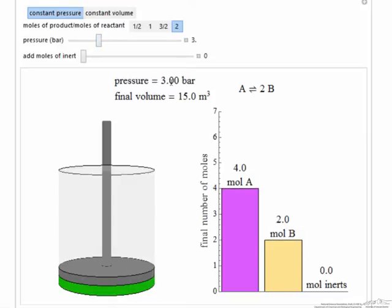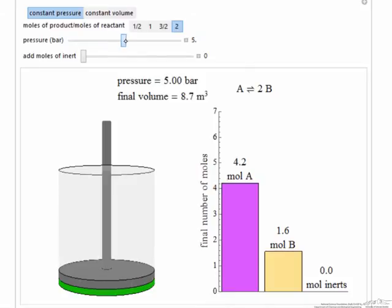the volume is less because we're fixing the number of moles of A initially. Increasing the pressure pushes the equilibrium to more A and less B.